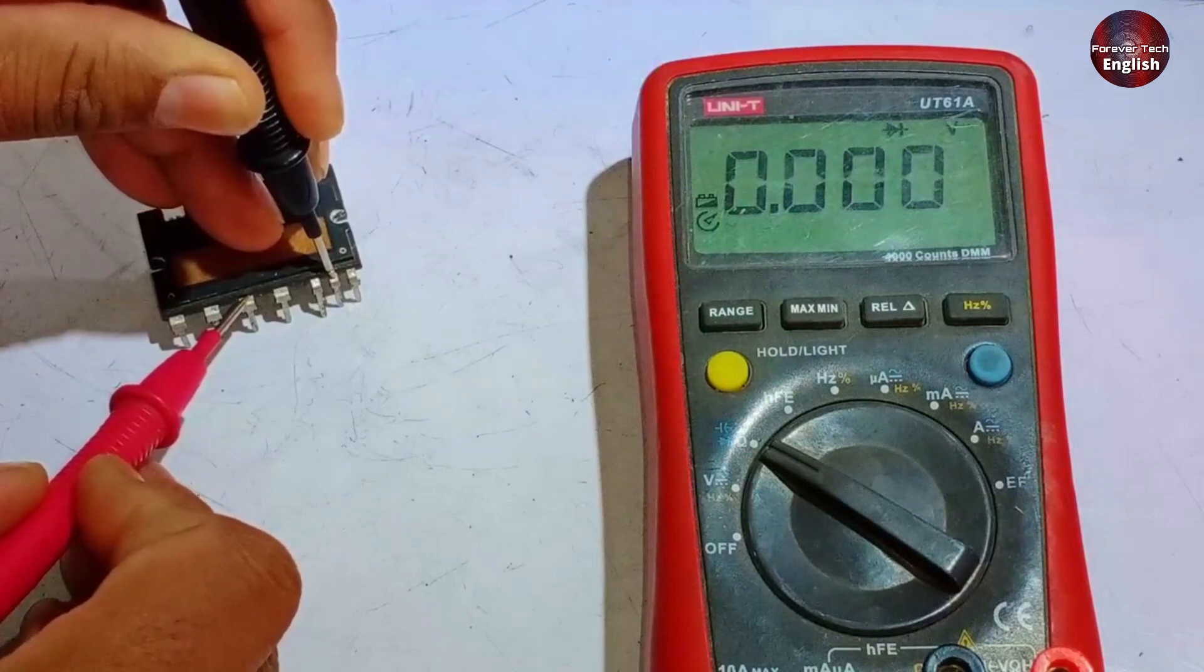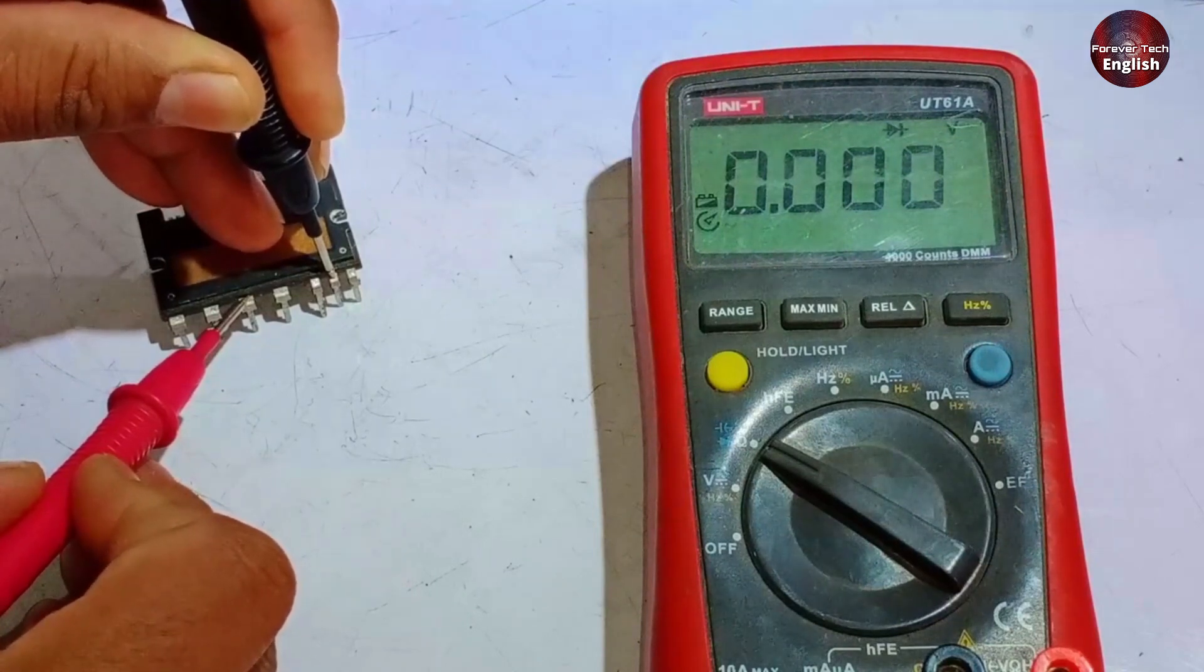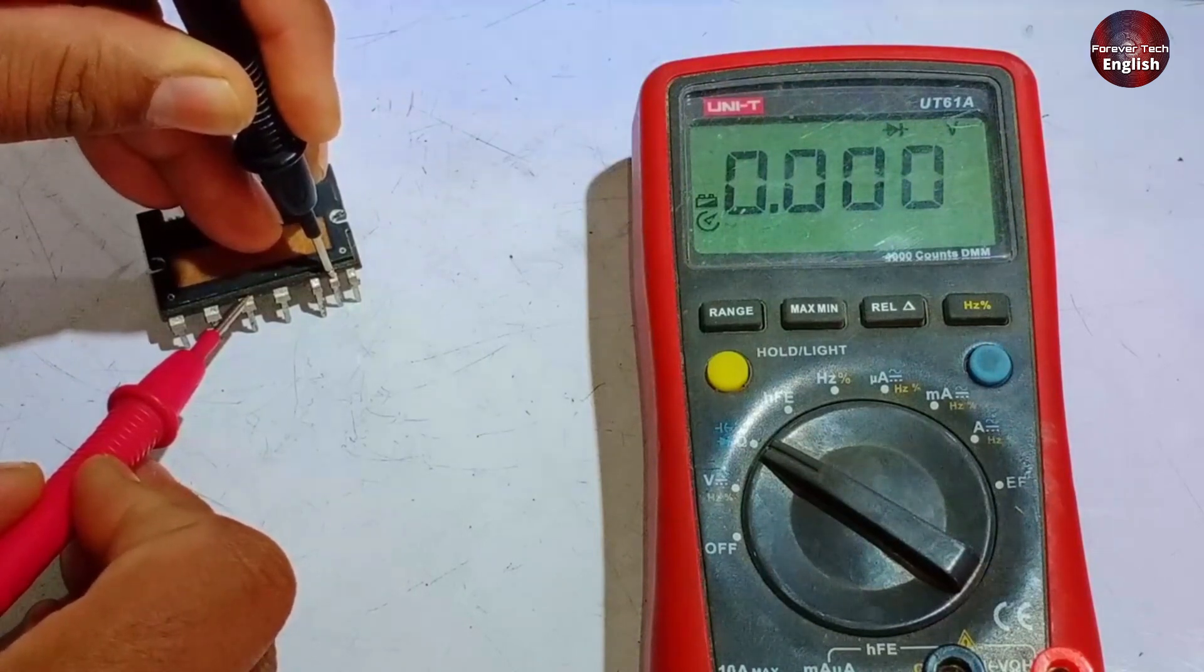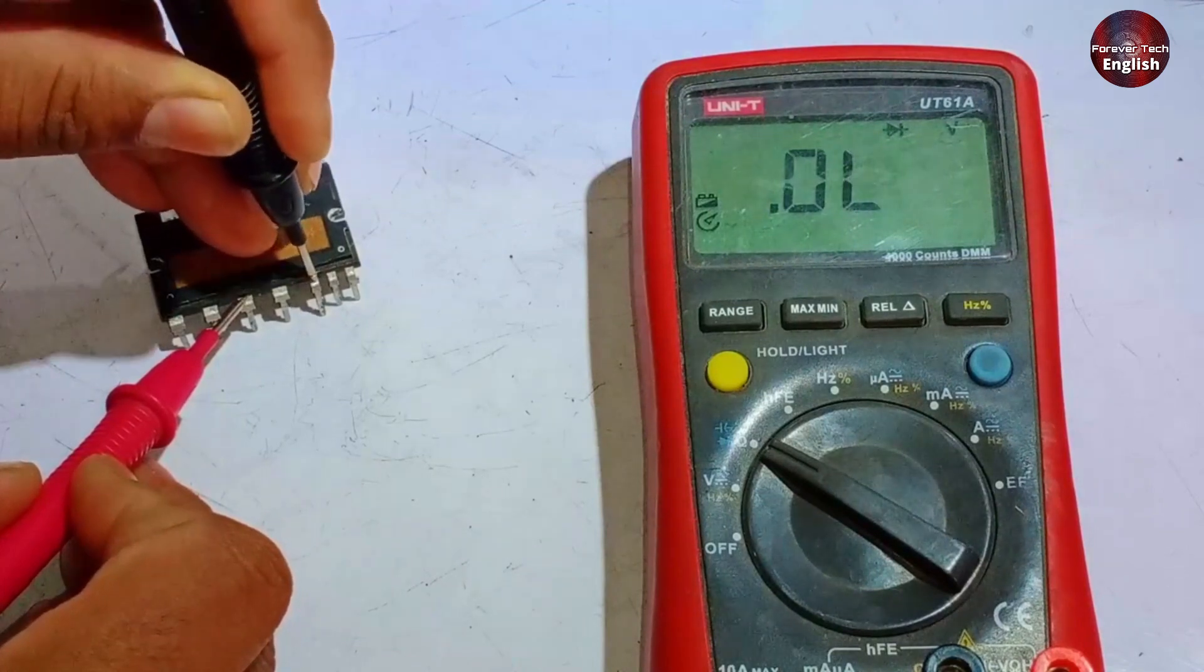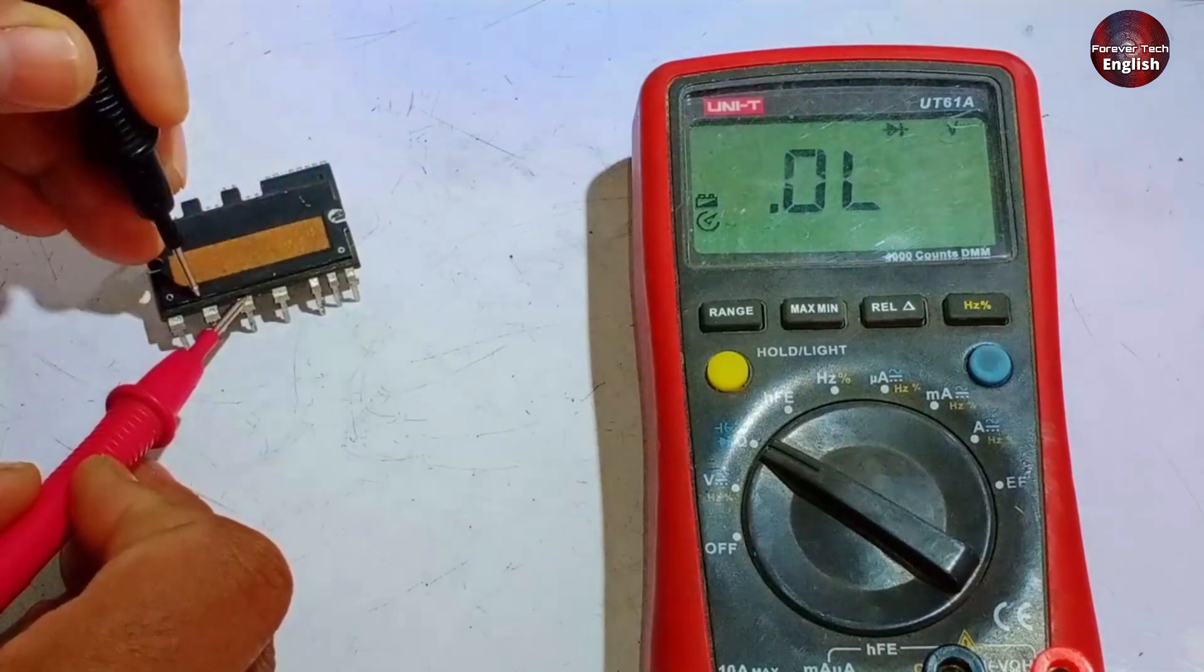However, since the IGBT is shorted, it is showing zero, but if it were in its original working condition, no value would be displayed. Similarly, no value should appear at the next point either.